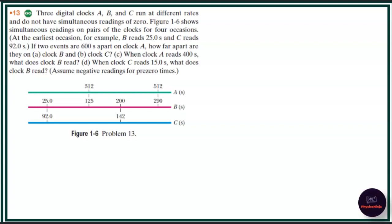Figure 1-6 shows simultaneous readings on pairs of the clocks for four occasions. At the earliest occasion, for example, B reads 25 seconds and C reads 92 seconds. If two events are 600 seconds apart on clock A, how far apart are they on clock B?